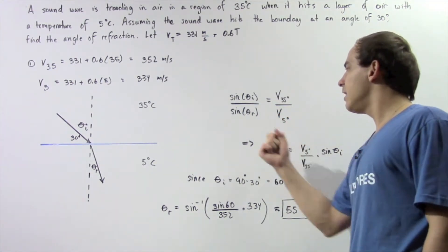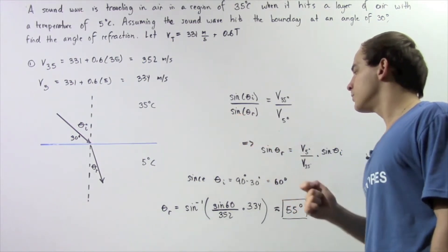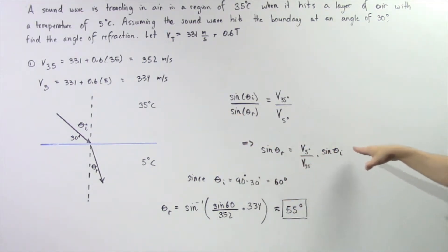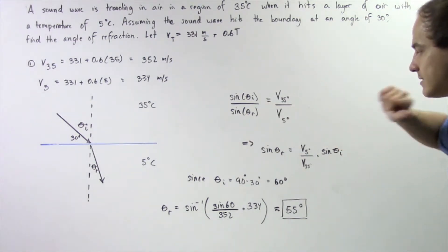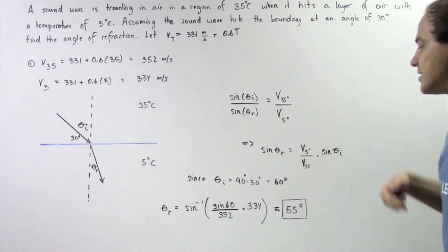So we essentially want to solve for the sine of the angle of refraction and we get the following result. Now notice we know what these velocities are and we know what the angle of incidence is. The angle of incidence is 90 minus 30, so 60 degrees.